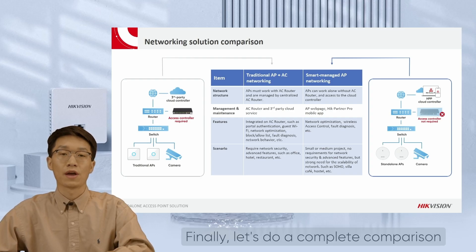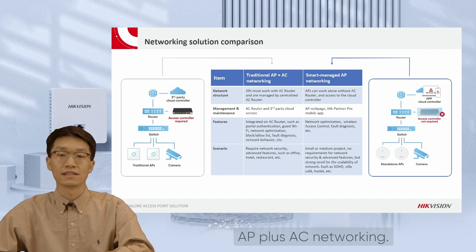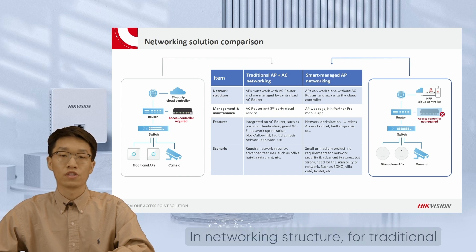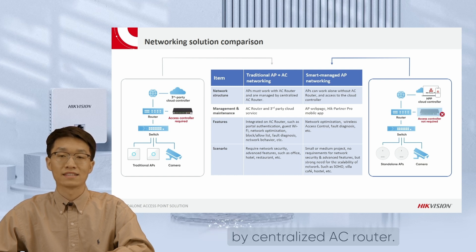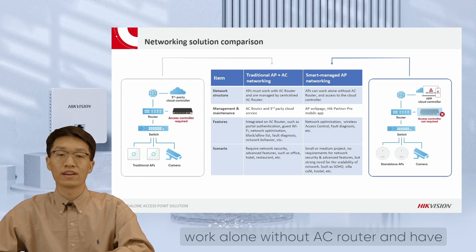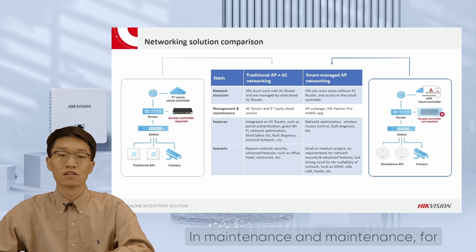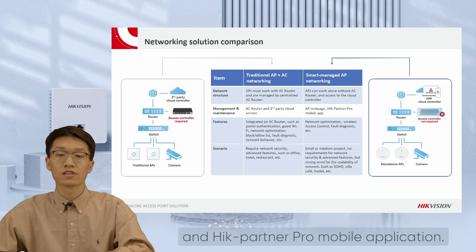Let's do a complete comparison between our Smart Managed AP networking and traditional AP plus AC networking. In networking structure, for traditional AP plus AC networking, APs must work with an AC router and are managed by a centralized AC router; whereas our Smart Managed AP networking can work alone without an AC router and has direct access to the cloud controller. In management, for traditional AP plus AC networking, customers must have an AC router and third-party cloud service; whereas our Smart Managed AP networking uses the AP web page and HackPartner Pro mobile application.